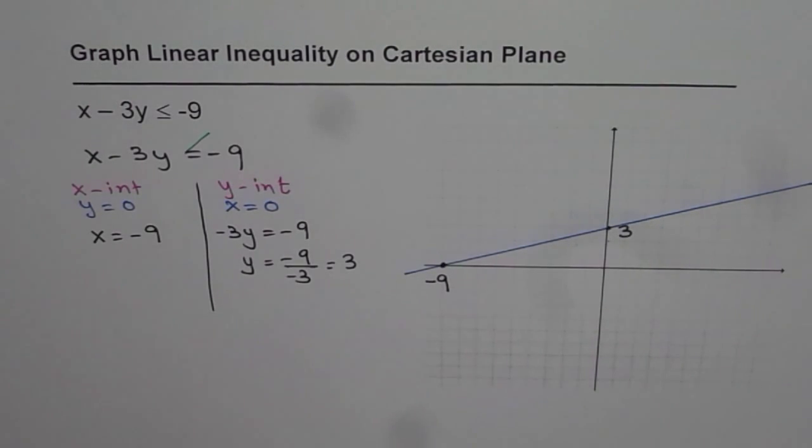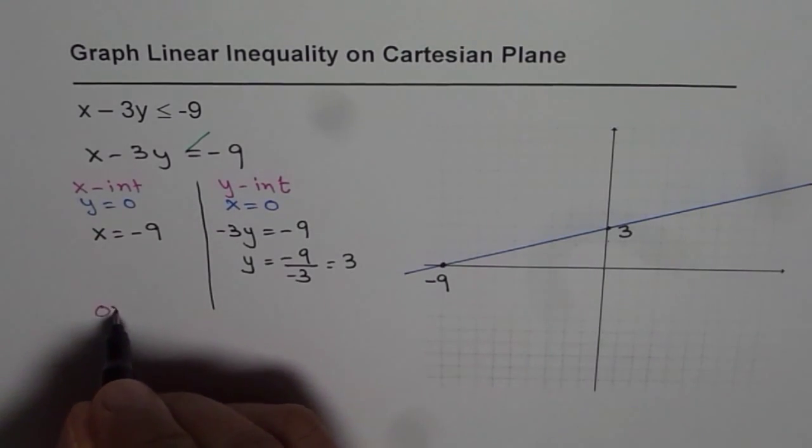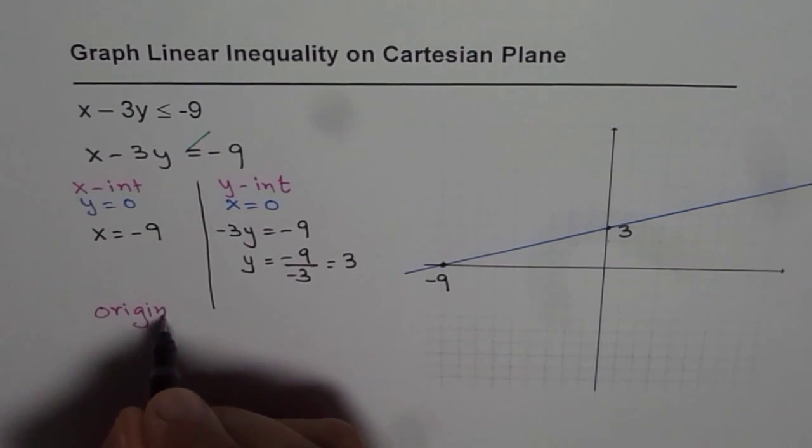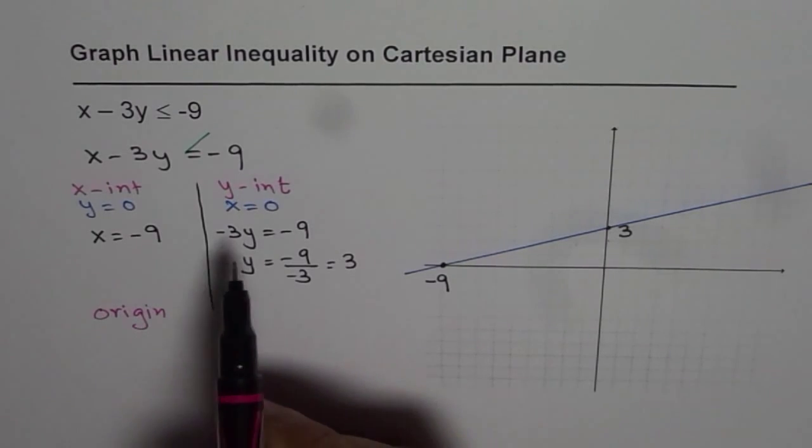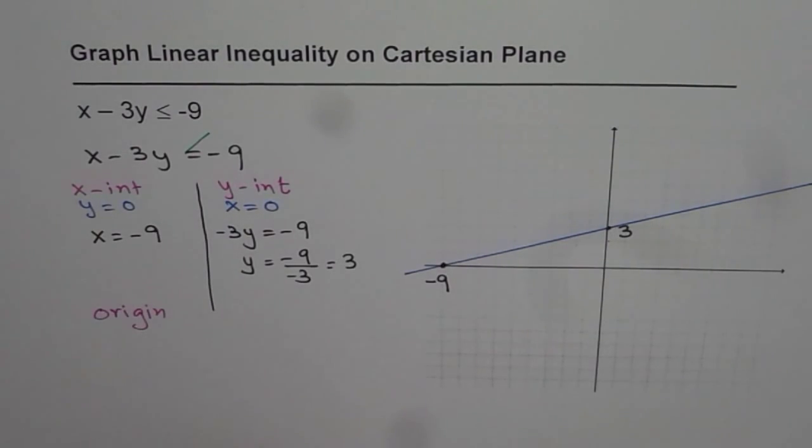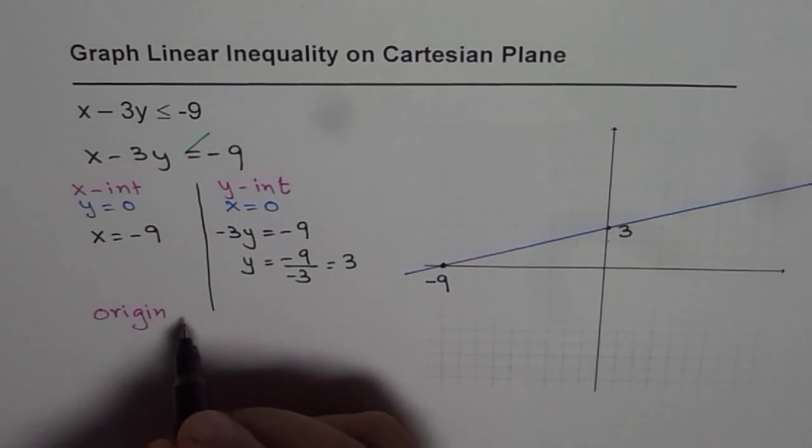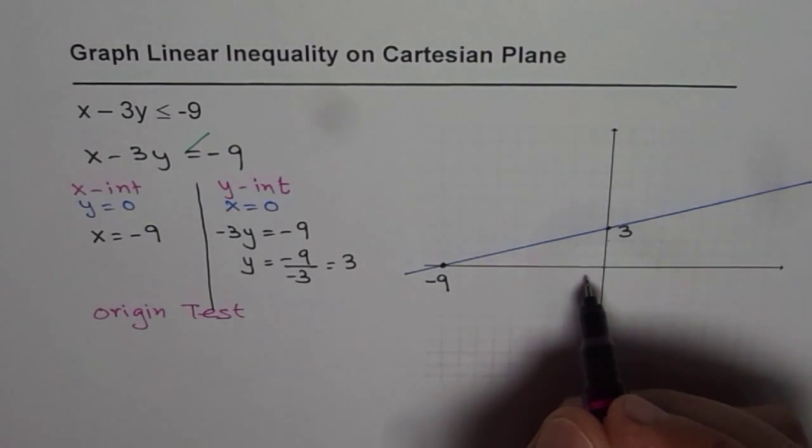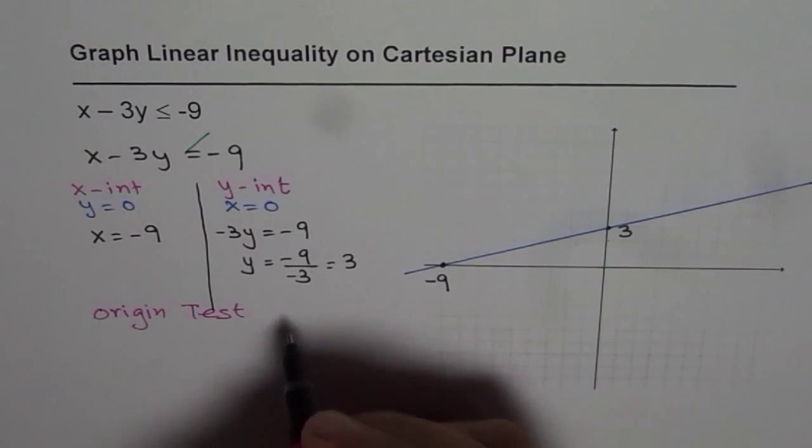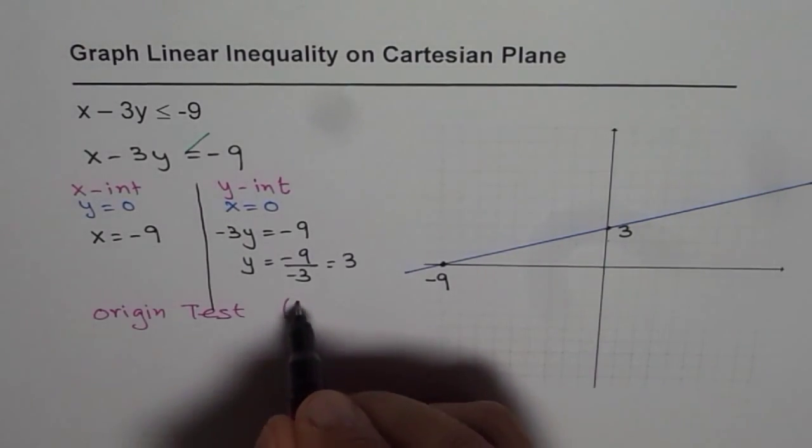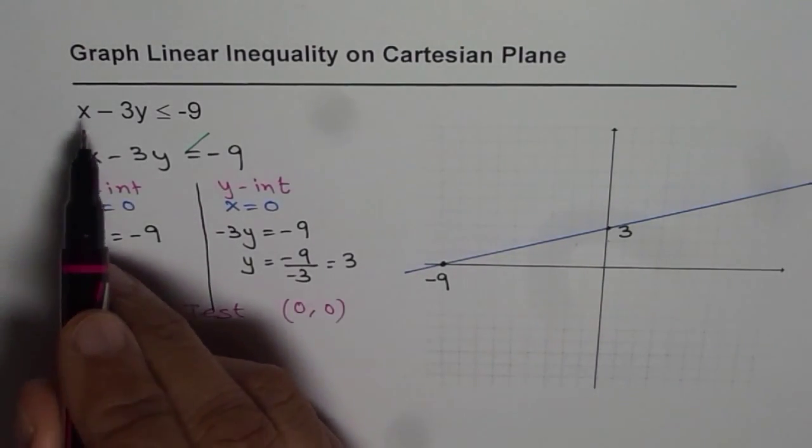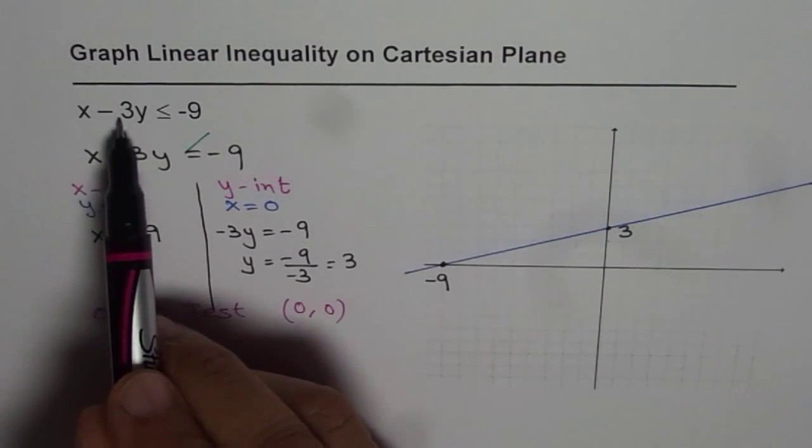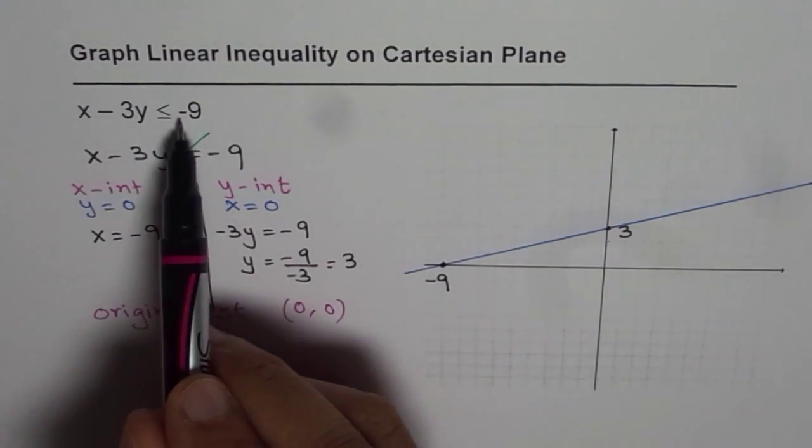We will always do the origin test. We'll check if origin is in our solution or not. Origin means the point (0,0). If I write 0, 0, I get 0 ≤ -9. Well, that is incorrect.